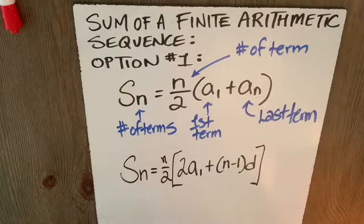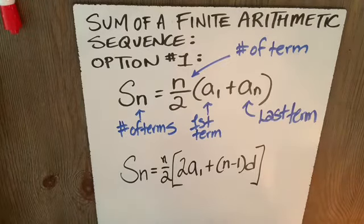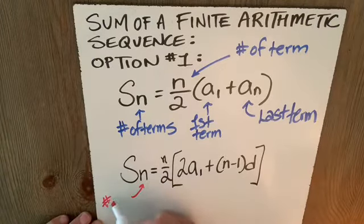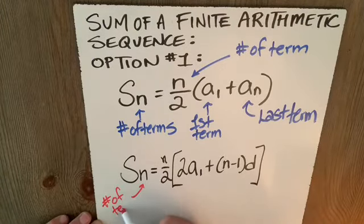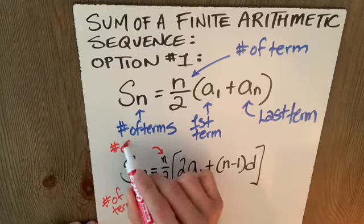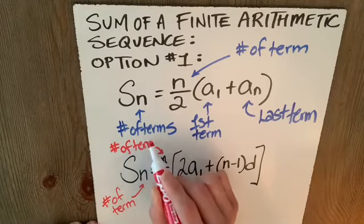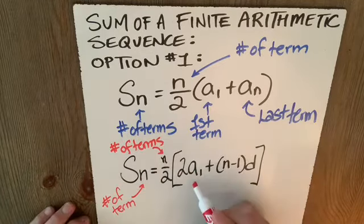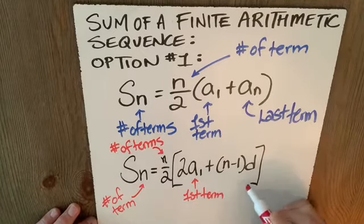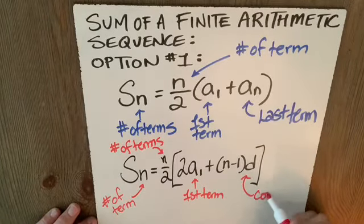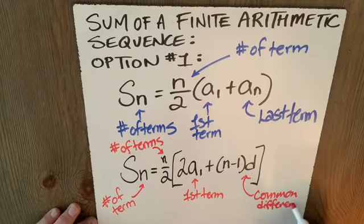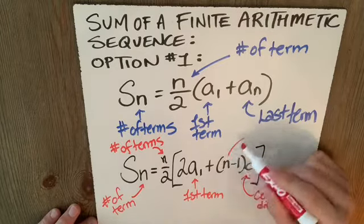Again, let's dissect this to figure out what we need to know to use this formula. I have to know the number of terms that I want to sum. So that n is the same as this, number of terms. A₁ remains the first term. And of course, d is our common difference. So, of course, this is the number of terms too.